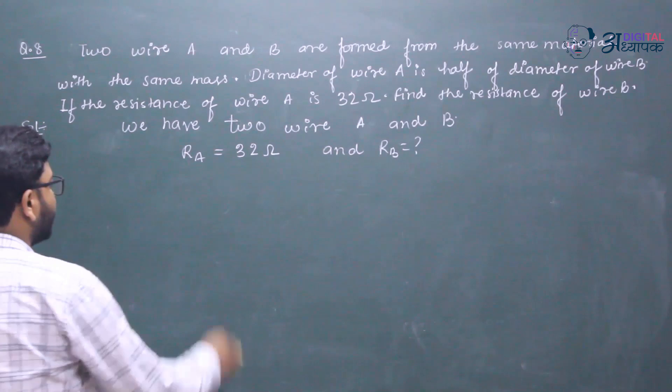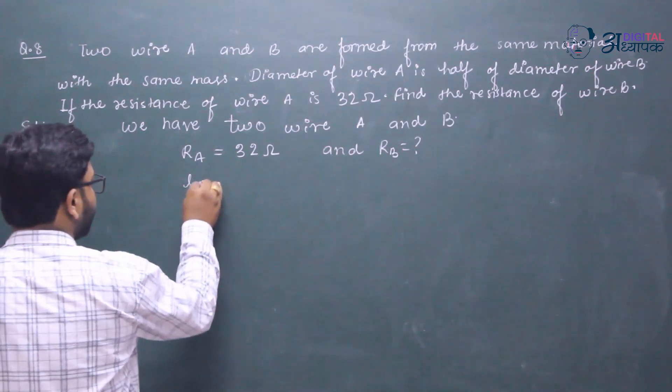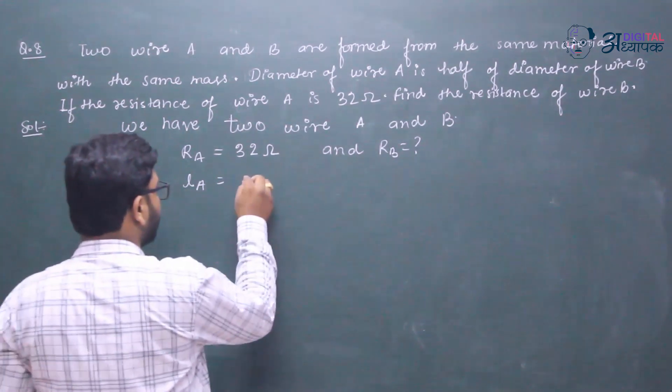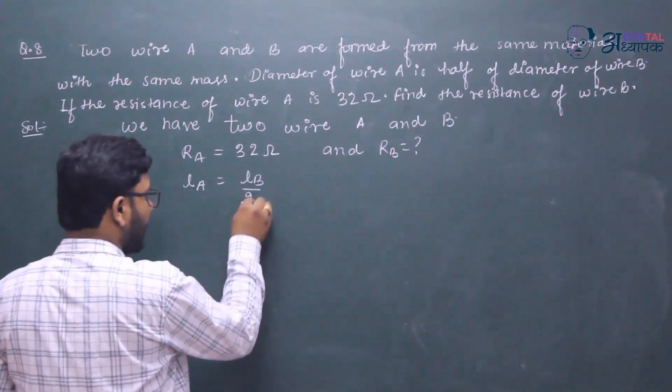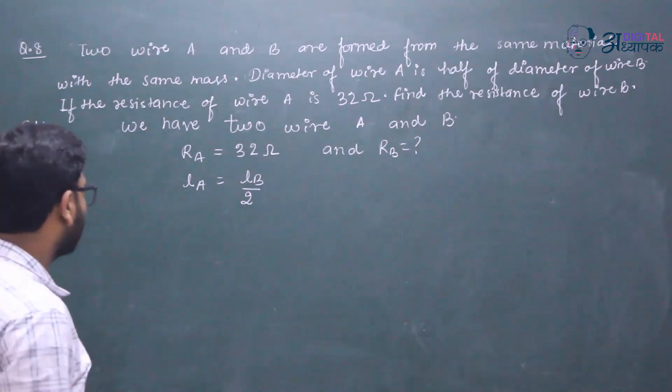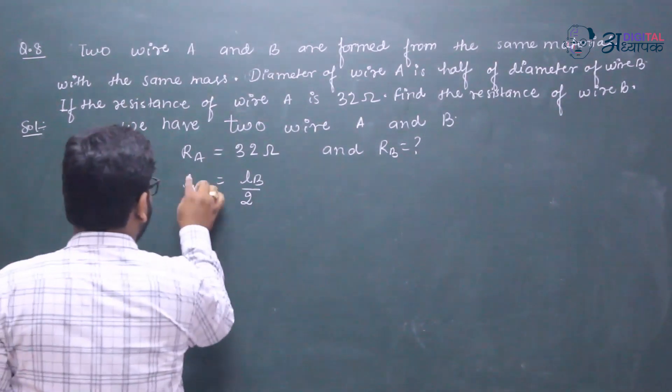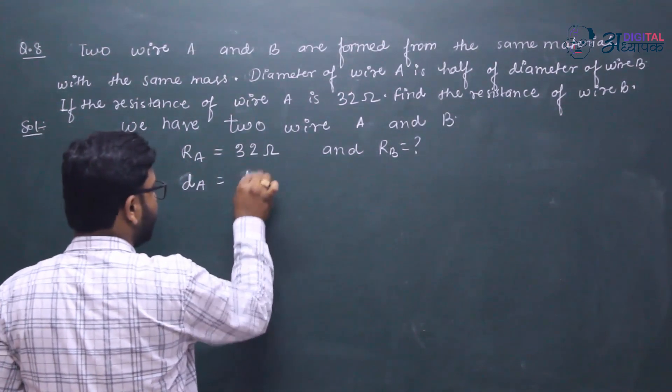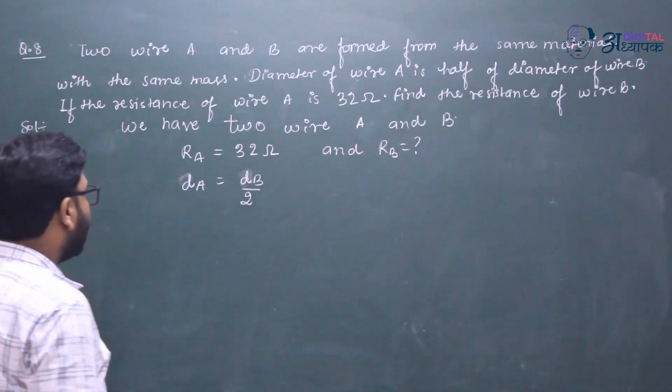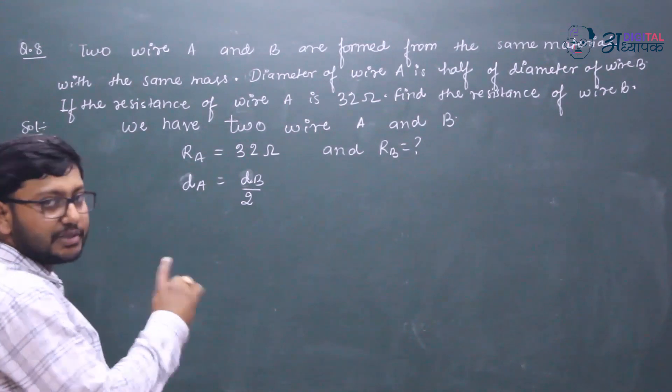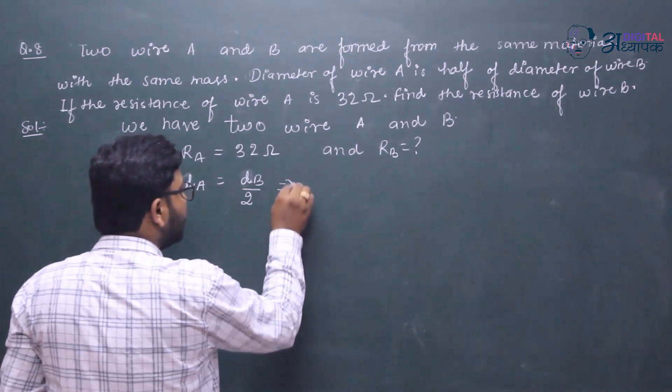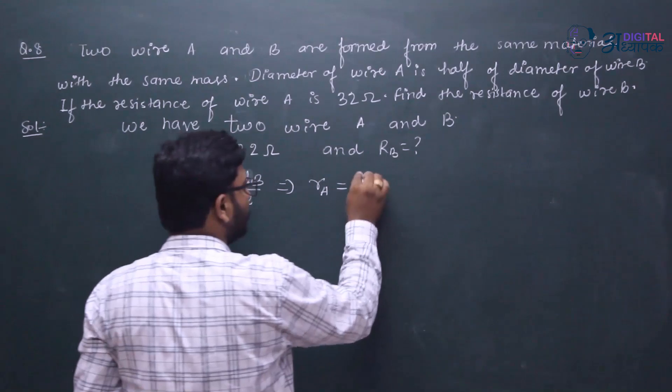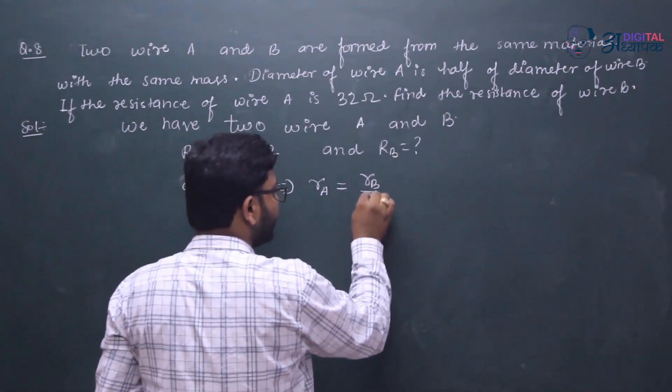The diameter of wire A is half. Sorry, the diameter of wire A is half the diameter of B.